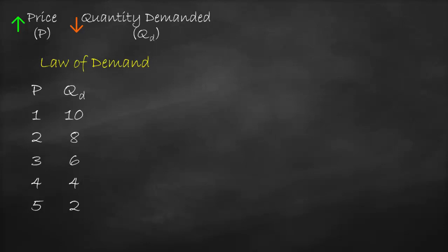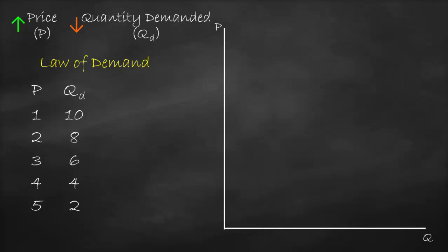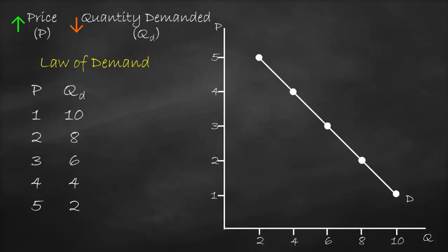Now let's draw this relationship between price and quantity demanded. On our y-axis we will put the price, and on our x-axis we will put the quantity demanded. The quantities on the x-axis are 2, 4, 6, 8, 10, and the prices on the y-axis are 1, 2, 3, 4, 5. At price 1 we have quantity demanded of 10; at price 2 quantity demanded is 8; at price 3 it is 6; at price 4 it is 4; at price 5 it is 2. Let's connect all these points — this gives us the demand curve.